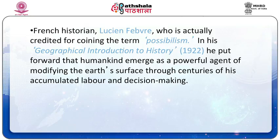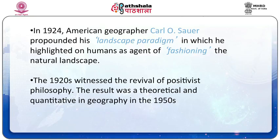It was the French historian Lucien Febvre who is actually credited for coining the term possibilism in his geographical introduction into history, in which he accorded to the Vidalian tradition of possibilism. He put forward that humankind emerged as a powerful agent of modifying the earth's surface through centuries of accumulated labor and decision making. In 1924, American geographer Carl O. Sauer propounded his landscape paradigm, highlighting humans as agents of fashioning the natural landscape.